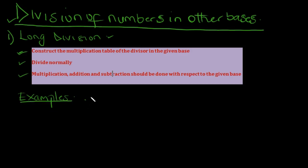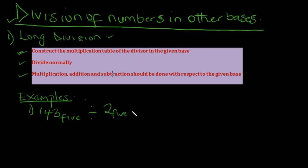Let's go through some examples. We have 1443 in base 5 divided by 2 in base 5. The first step involves constructing the multiplication table of the divisor. Here, 2 is the divisor and 1443 is the dividend. We have to construct the multiplication table of the divisor, which is 2, in the given base, which is base 5.